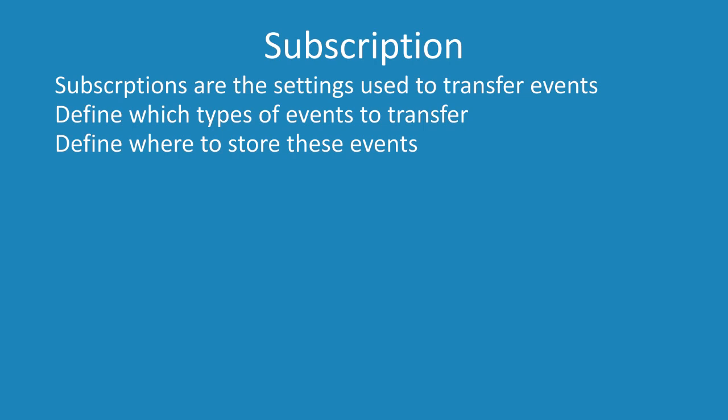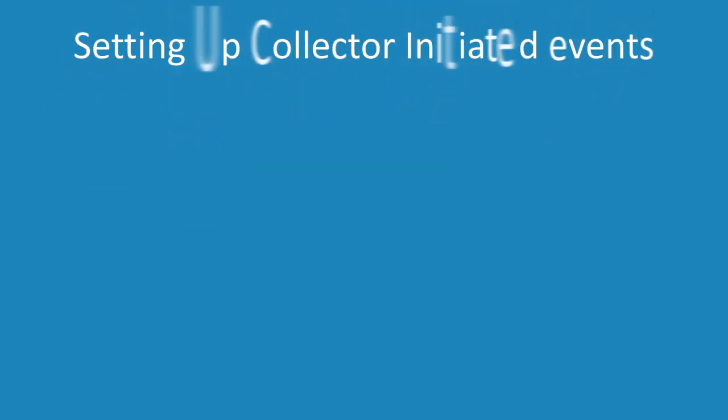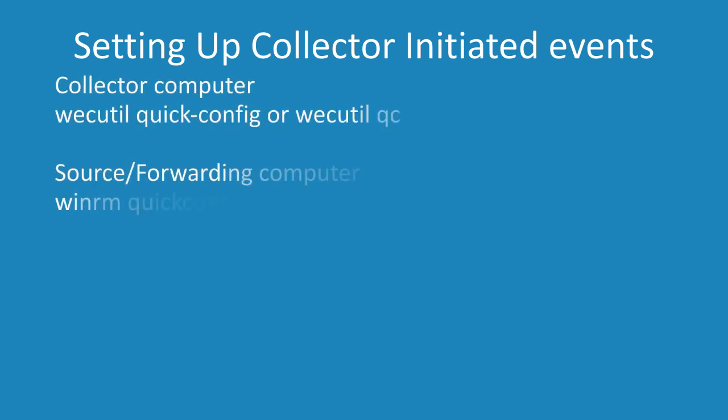In order to start using collector initiated subscription, the forwarder and collector need to be configured. Luckily Microsoft provides this with only one command each for the forwarder computer and the collector computer. This will configure the service required as well as configure other required options like the Windows firewall. On the collector computer you need to run WECUtil quick config. This will configure the computer to start sending events.